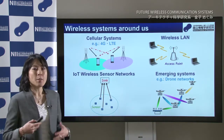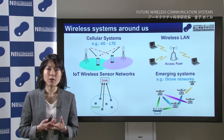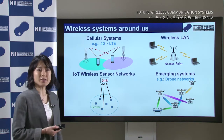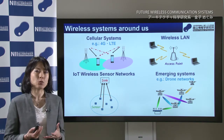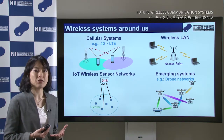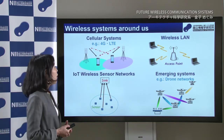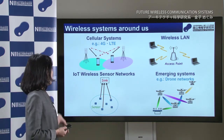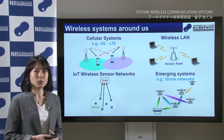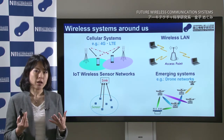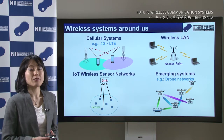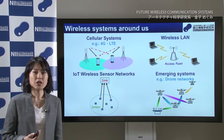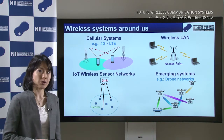There are many wireless systems around us in our everyday life. For example, the cellular systems, which is the network of smartphones with 5G or LTE. We also have many wireless LAN systems around us, and also the IoT wireless sensor networks, which can be used to monitor our environment. And we also see the advent of new emerging systems, such as drone networks.